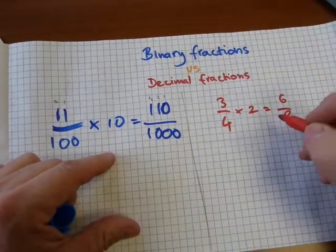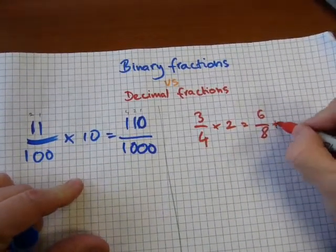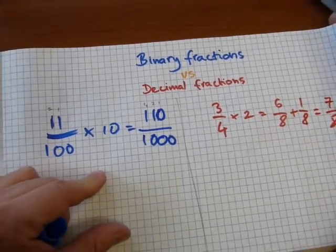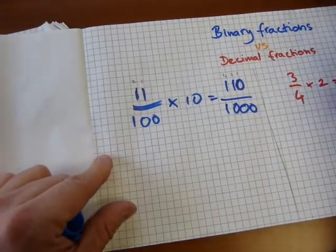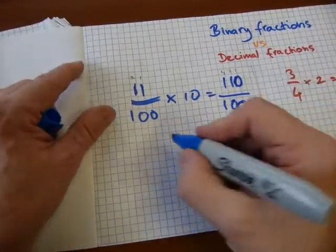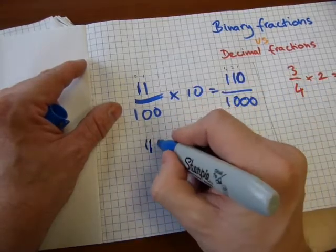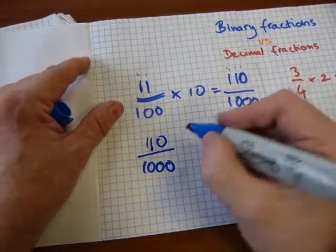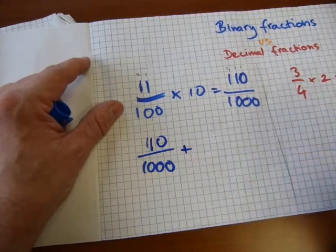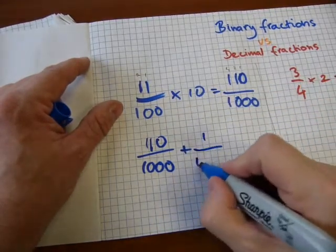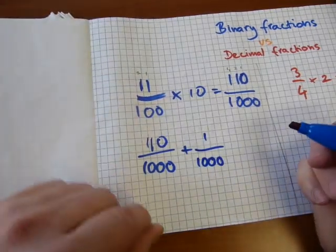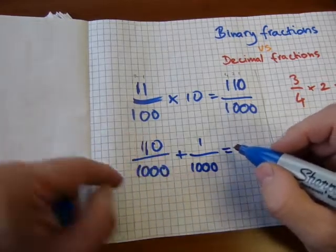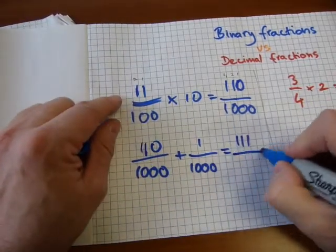And you can also add fractions to this 6/8. We can add another 1/8, and we come up with an answer of 7/8. And the same happens in binary. We can add to 6/8, we can add one more eighth, which is written as 1/8. Because that 1 is in the eighths place value.